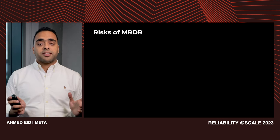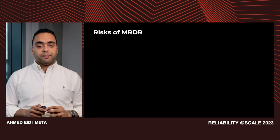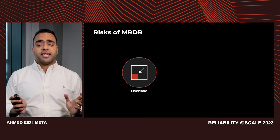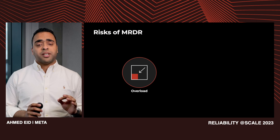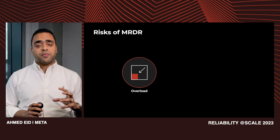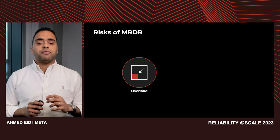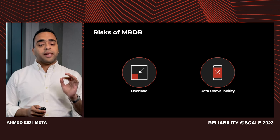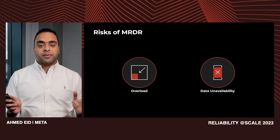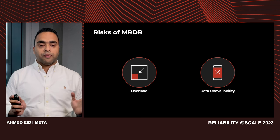Risks of MRDR are similar to those we encountered while working on the single-region DR program. Overload — since demand can exceed supply, leading to melting down our infrastructure. Demand refers to user traffic on our family of apps, and supply refers to our serving capacity, which currently covers only single-region failures. Additionally, data unavailability — since we store data replicated across regions with majority quorum, losing two or more regions can lead to data unavailability if we don't have the right data replication and placement.